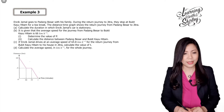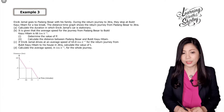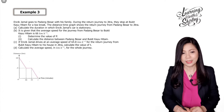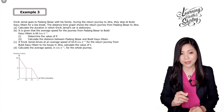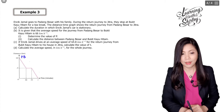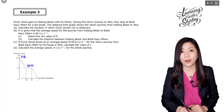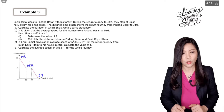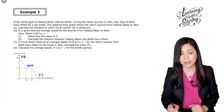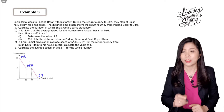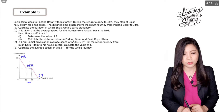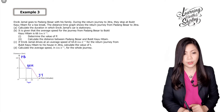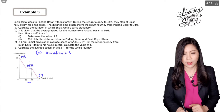Let's look at example number three. Encik Jamal goes to Padang Besar with his family. During the return journey to Jitra, they stop at Bukit Kayu Hitam for a tea break. Part a: calculate the duration when the car is stationary. The horizontal line spans from 30 to 55 minutes, so the duration is 55 minus 30, which equals 25 minutes.